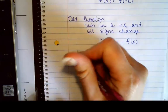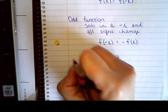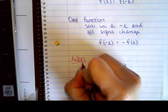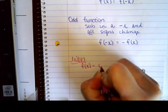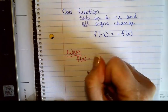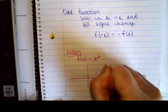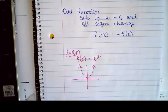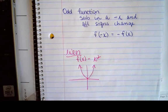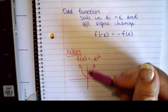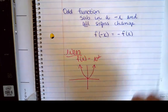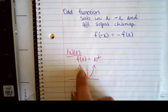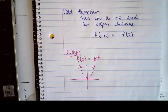So what does that look like? For even functions, let's look at f of x equals x squared. We already know that looks like a parabola. And if you'll notice, there's beautiful symmetry across the y-axis. So if I were to fold this on the y-axis, this arm and this arm would lay on top of each other.